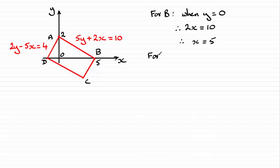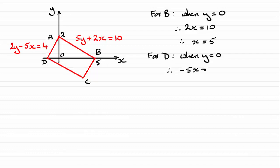Now for D — again this is when y equals zero in the equation for AD, which we found in the first part. Setting y equals zero gives minus 5x equals 4, which leads to x equals minus 4 fifths. So D is at minus 4 fifths in that direction.